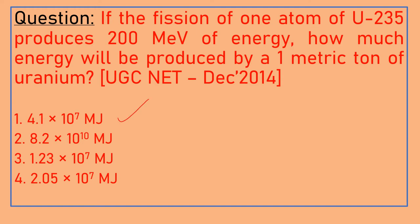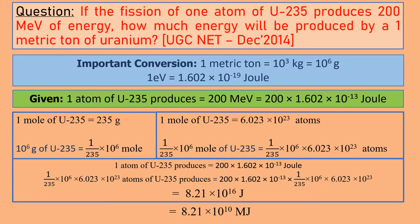The options are: 4.1 × 10^7 MJ, 8.2 × 10^10 MJ, 1.23 × 10^7 MJ, and 2.05 × 10^7 MJ. We need to find out which option is correct.